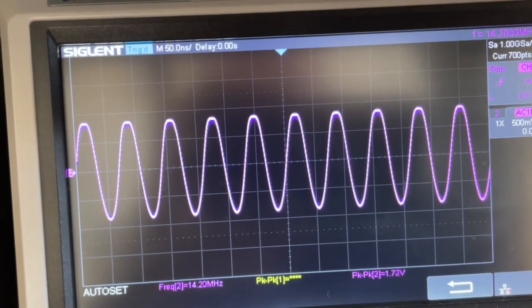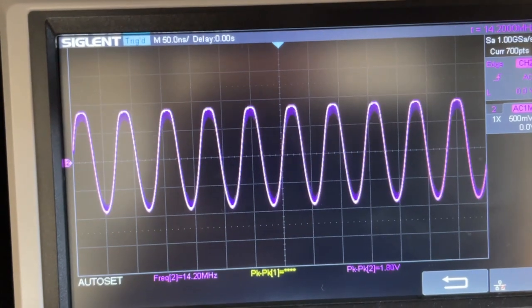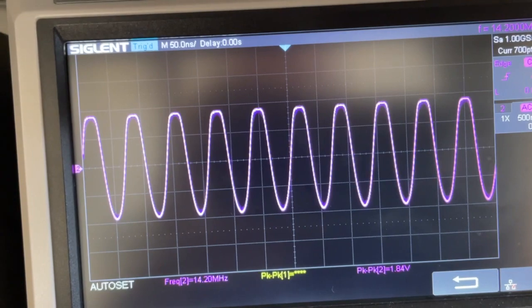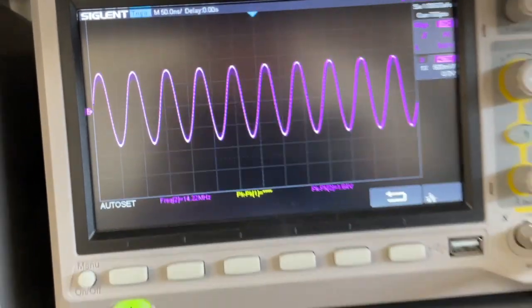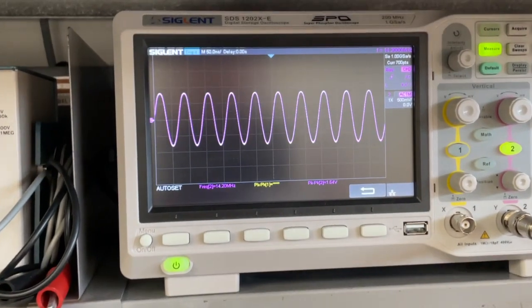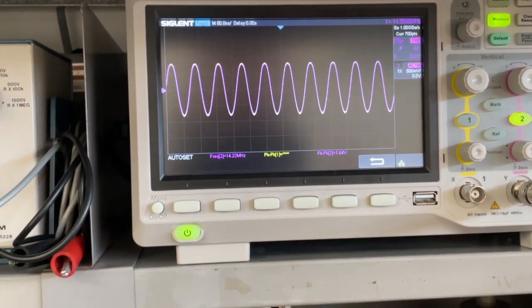And at minus 20, we're starting to see it go into compression. You can see that the positive peak is starting to flatten off. So the data sheet is pretty accurate. It says that minus 21 dB is the point where it starts to go into compression.